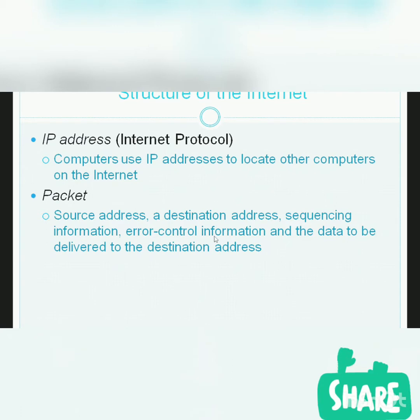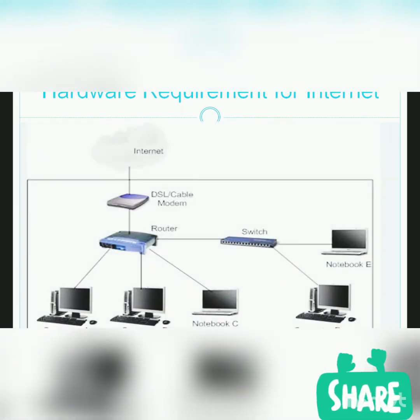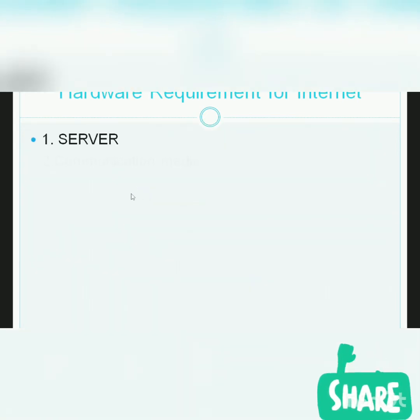Each packet also carries some error control information to handle errors during wire transmission. There are also hardware devices in between different computers that provide the service of transmission. Now let's see the basic hardware requirements for the internet. The internet is basically a collection of servers that are far away from us, and these servers are provided by internet service providers like Google, Yahoo, and Amazon.